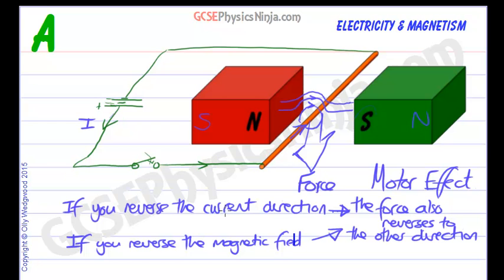If you did both, if you reversed the current direction by turning the battery around and you flipped the magnet around then they would cancel each other out and you would still have a force acting downwards on the wire.